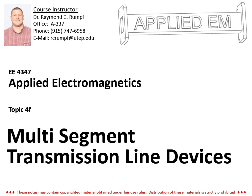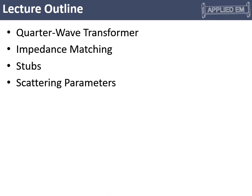Multi-segment transmission line devices. In this video, we're going to talk about the very famous and well-known quarter wave transformer. That leads into impedance matching, and then we'll end with two quick introductory discussions of stubs and scattering parameters. We're definitely not doing a sufficient job covering stubs and scattering parameters here — that's really meant for a microwave engineering class, but I at least want to mention it.